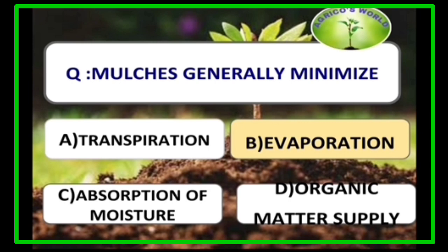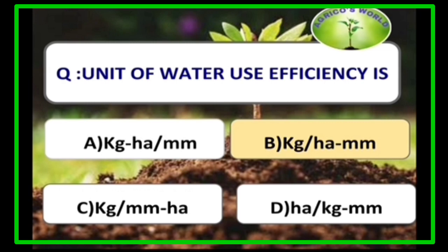Mulches generally minimize evaporation. The unit of water use efficiency is kg per hectare mm, and the formula of water use efficiency is yield divided by water requirement.